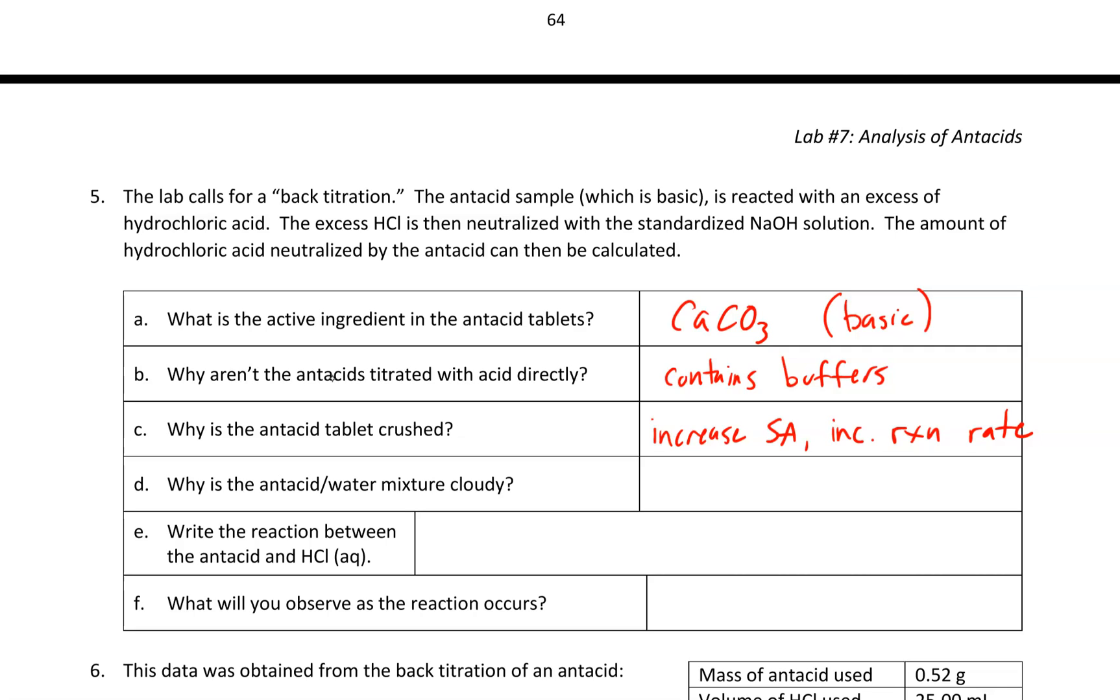When you combine the two, the hydrochloric acid with the crushed up calcium carbonate, it's going to be kind of akin to adding like baking soda and vinegar. You're going to see bubbles immediately produced as carbon dioxide is released. You want to let that reaction go until the bubbling stops. So you might want to swirl it a little bit, kind of get everything to react.